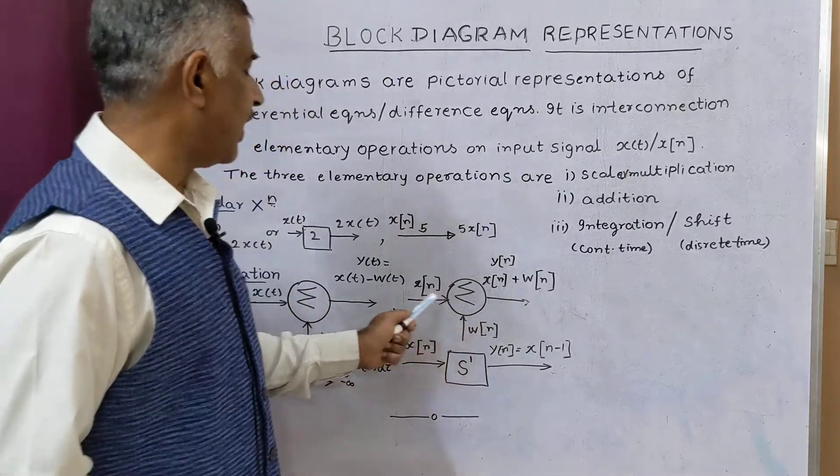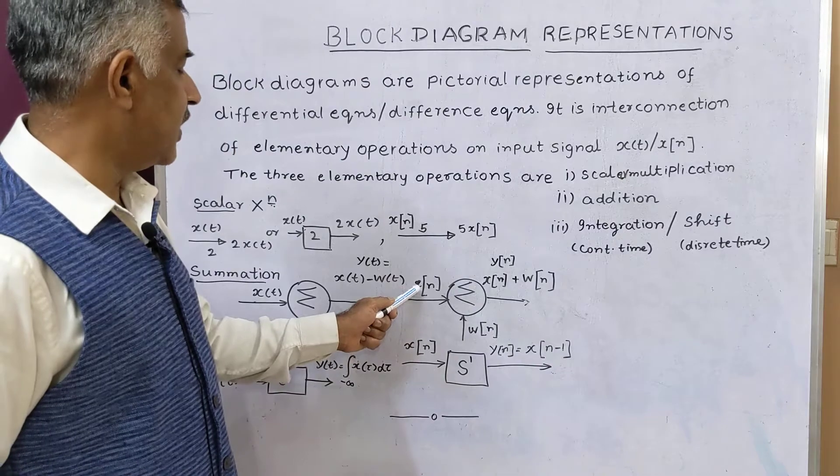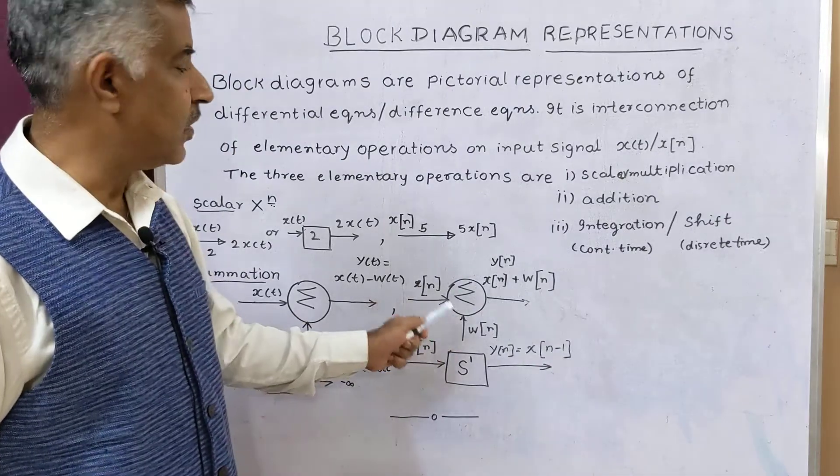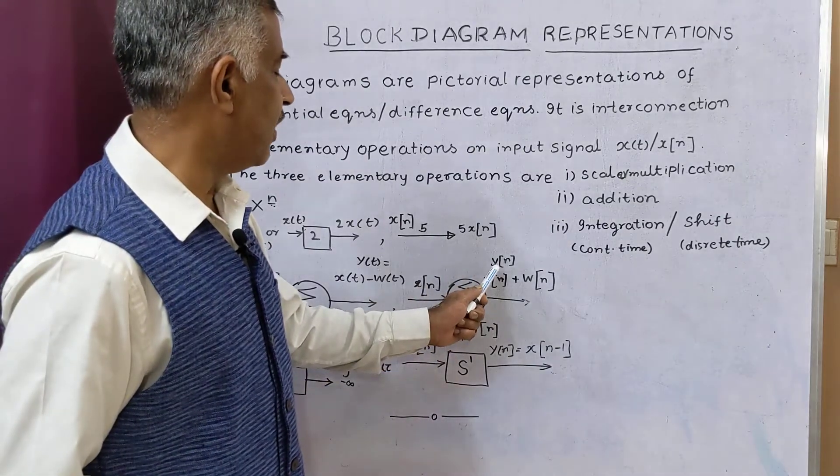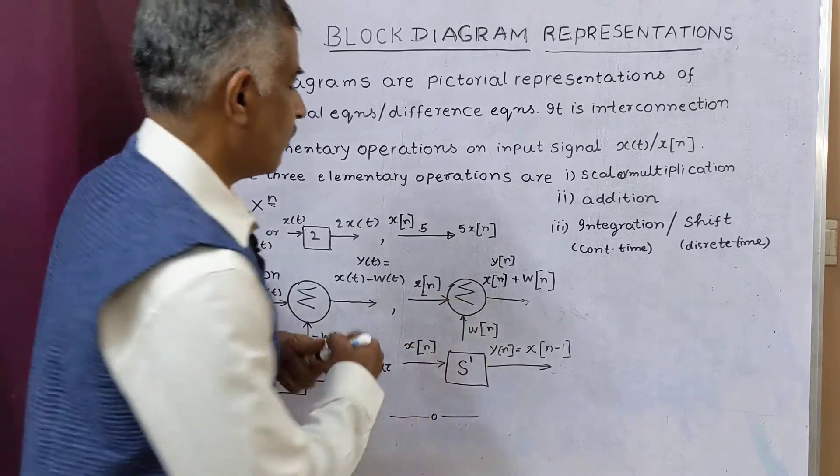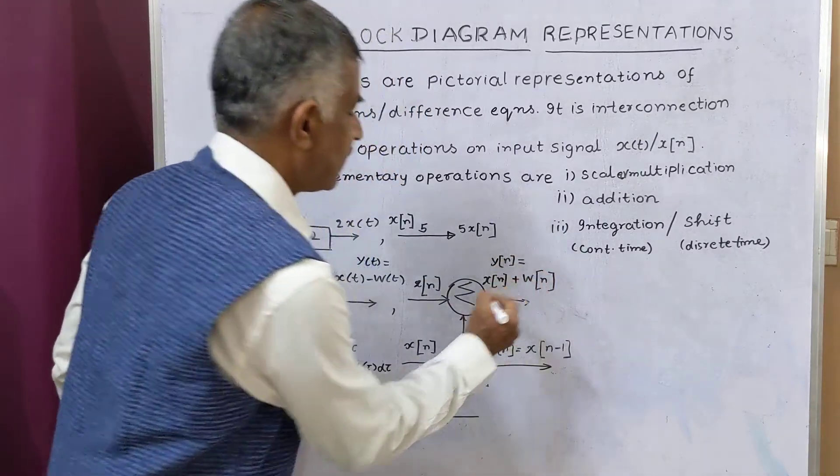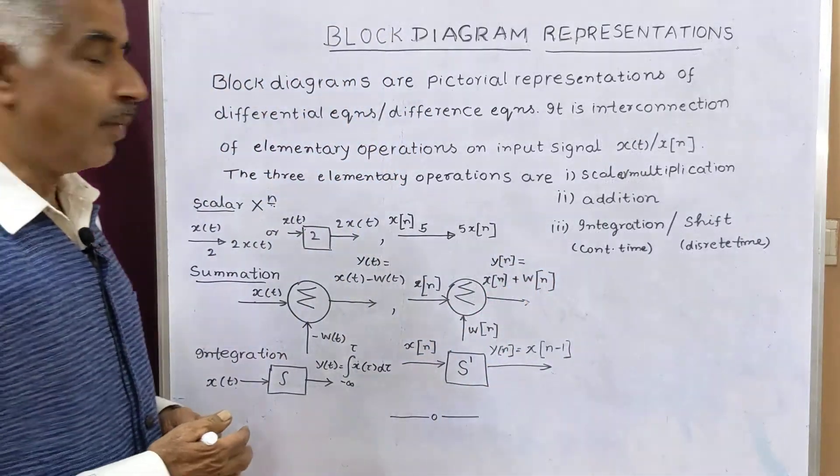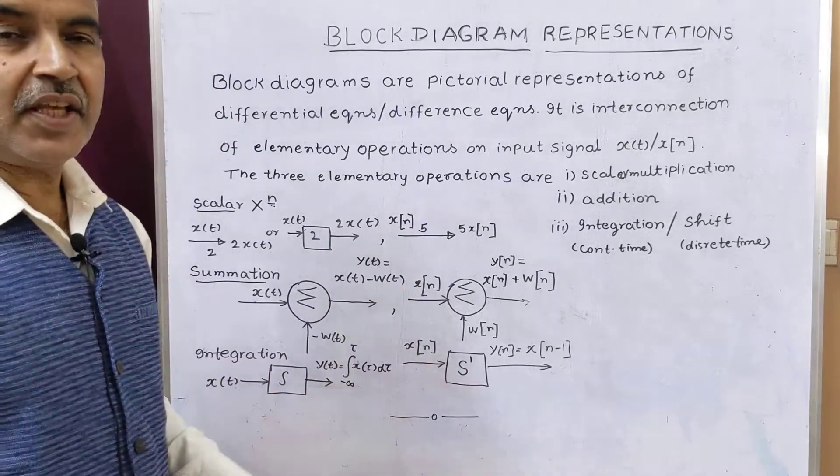And for discrete time system, here x[n] and w[n] are inputs and output is y[n] is equal to x[n] plus w[n]. So this is in the case of summer.